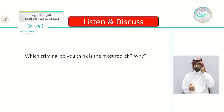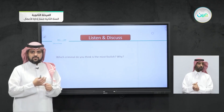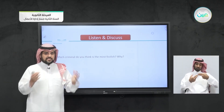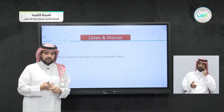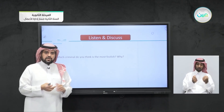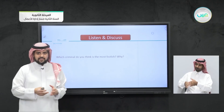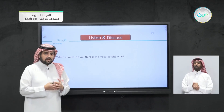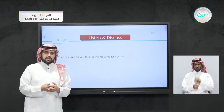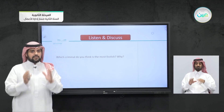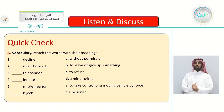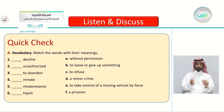Which criminal do you think is the most foolish? We can hear different opinions. Is it the person who was just one day away from being released and then tried to escape? Is it the criminals in Malaysia who used a small compact car? Or is it the last one who signed his own name? To me, the most foolish one is the first — the impatient inmate. If he had just waited 24 hours, he would have been released. Now he is facing maybe a whole year in prison.